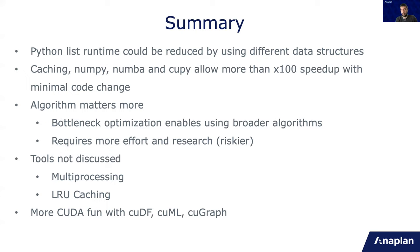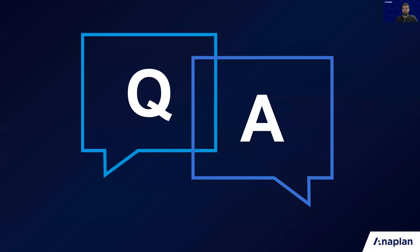Things that we didn't discuss here are multiprocessing and LRU caching, which could improve the score even more. And there are more CUDA API libraries such as CuDF, which is Pandas, CuML, which is similar to SKLearn, and CuGraph, which is for graph analytics. And thank you for listening. And I'm going to be in the chat for Q&A. Thank you very much.